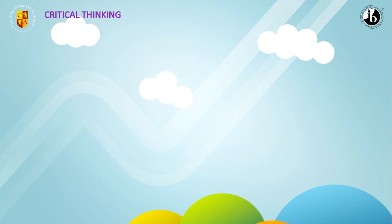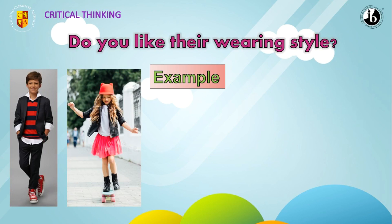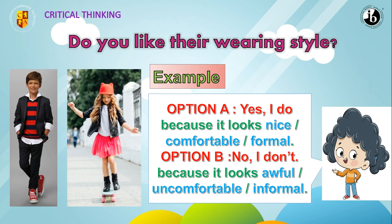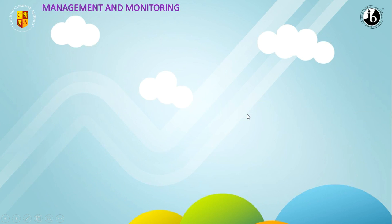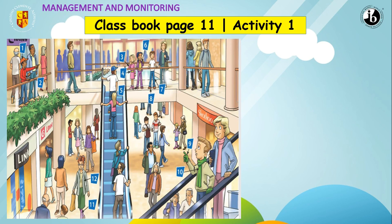Now the objectives: to identify clothing items and to describe people's clothes. First, do you like their wearing style? You can say 'Yes, I do, because it looks nice, comfortable, or formal' — for example, 'I like their wearing style because it looks nice.' Or you could say 'No, I don't, because it looks uncomfortable or awful.'